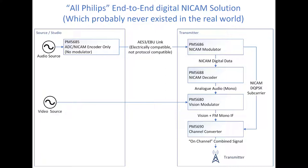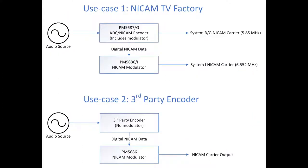That's probably a pretty unlikely use case. So let's have a look at some other possible use cases for the 5686. The first one is actually in a TV factory. In this scenario here, we've got a 5687 of standard BG, but we also want to have a system I NICAM carrier, which is a slightly different frequency. So we take the digital output from the 5687, feed it into the 5686. So then we have system BG and system I NICAM carriers from a single source. That is a heck of a lot cheaper to do it that way than having two 5687s. Another possible scenario is where we have a NICAM solution that has been made by a different company, but they don't actually include the modulator as part of their solution. The BBC's NICAM solution is an actual example of that.